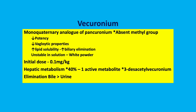Vecuronium is a monocaternary analogue of Pancuronium; however, it lacks one of the methyl groups and as a result the properties are different: reduced potency, reduced vagalytic properties, unstable in solution so it's presented as a white powder, and increased lipid solubility so it undergoes increased biliary elimination.